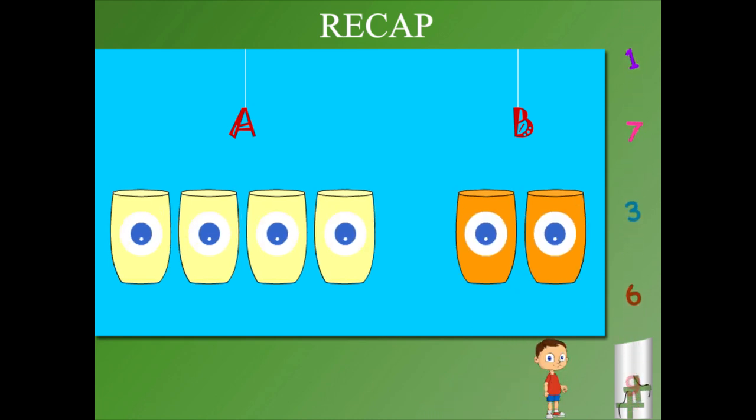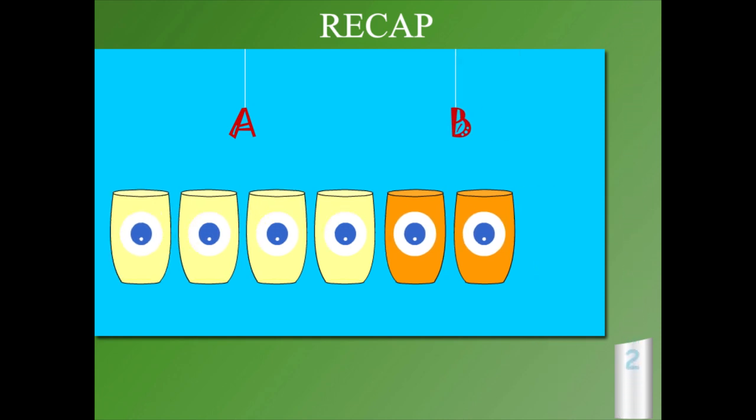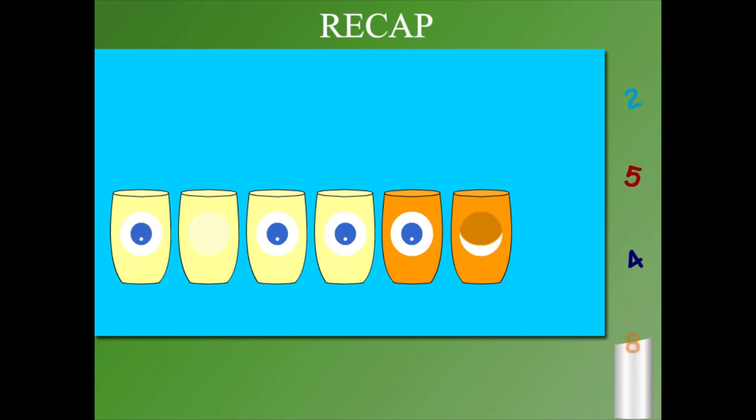So, 4 yellow glasses and 2 orange glasses make 1, 2, 3, 4, 5, and 6 glasses.